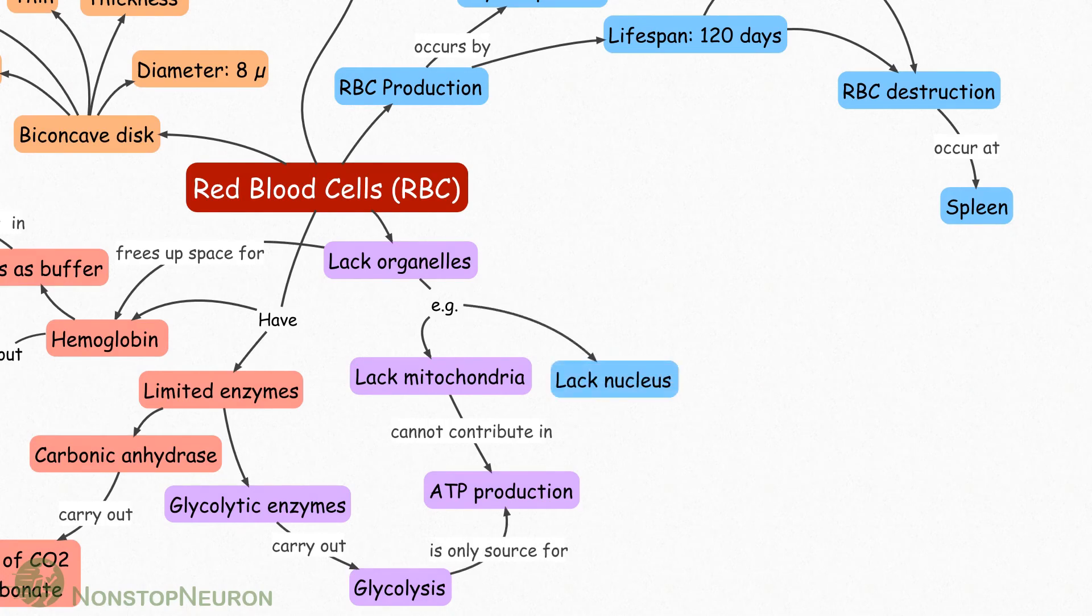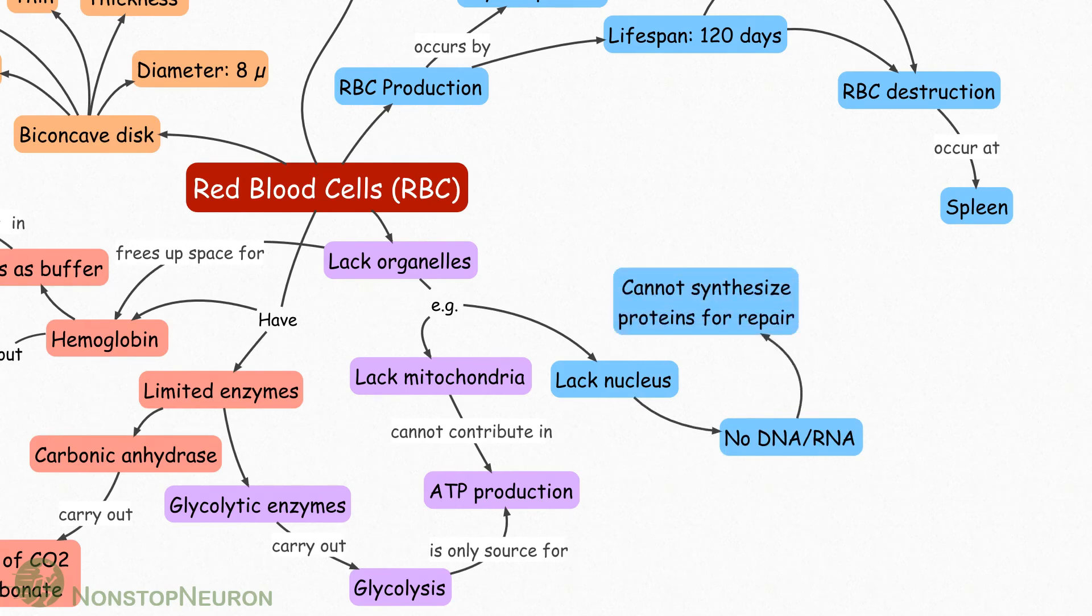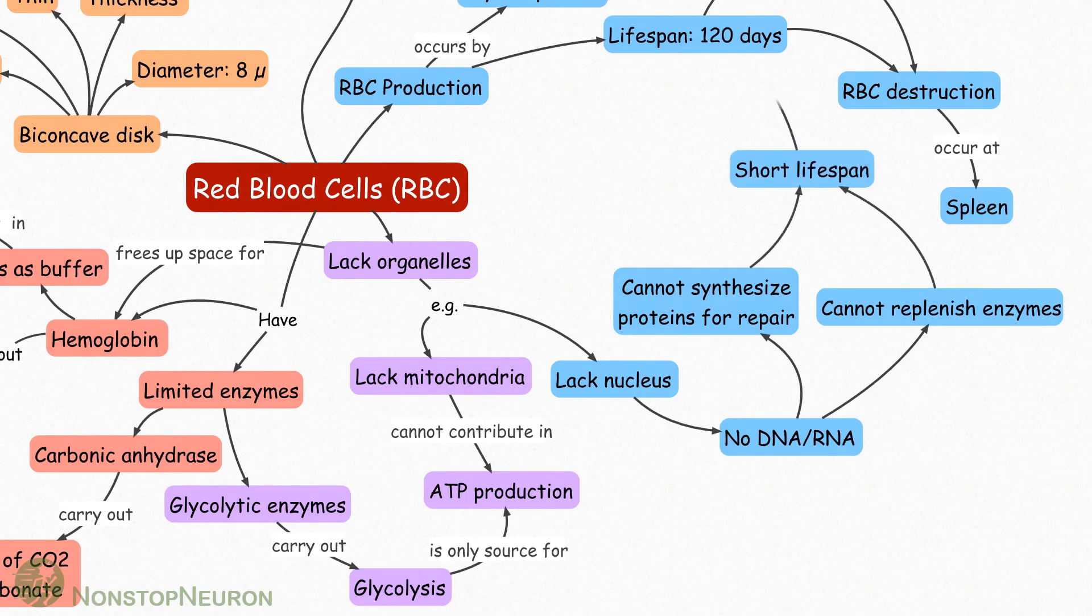Also, RBCs lack nucleus so there is no DNA or RNA. So, they cannot synthesize proteins for repair and neither can replenish enzymes. This is the reason for short lifespan of only 120 days for RBC as compared to other cells of the body which have a much longer life.